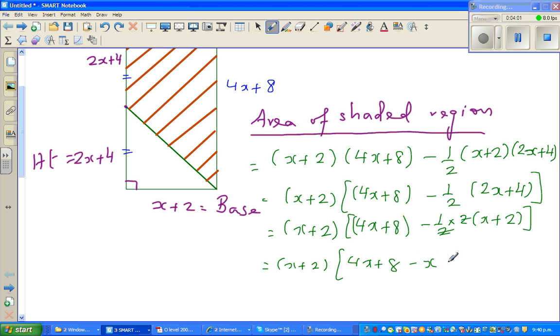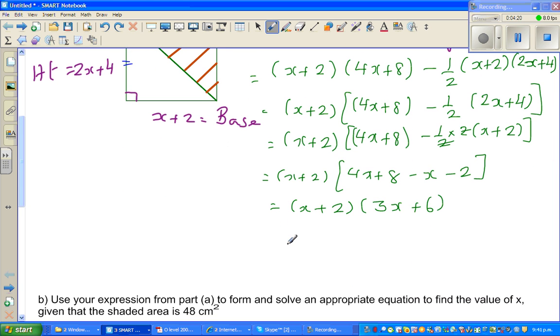So this is equal to (x + 2) times (4x + 8), and this 2 and this 2 gets canceled, that is minus (x + 2). So this is (x + 2) times (4x minus x is 3x), 3x plus 6. Now I do the simple expansion of this, which is 3x² + 6x + 6x + 12.